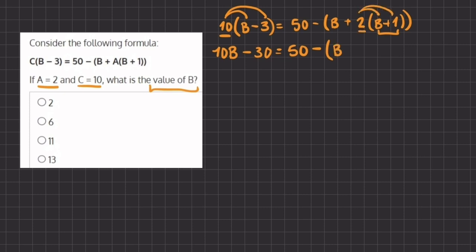So here, we have b plus 2b, because 2 times b gives us 2b, and 2 times 1 gives us a 2. Alright, so now we can simplify this big parentheses into b plus 2b, which gives us 3b, and plus 2.